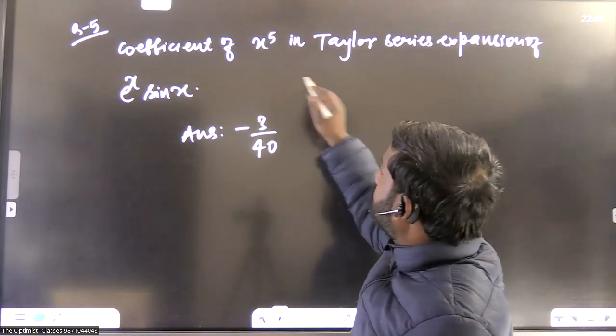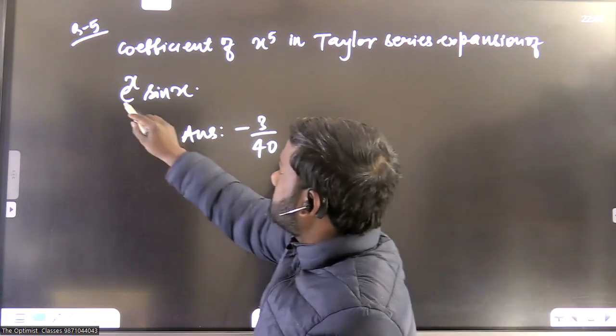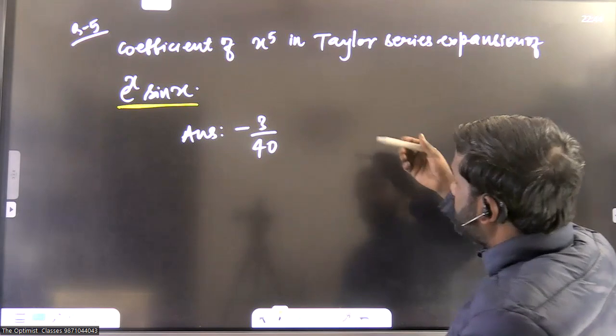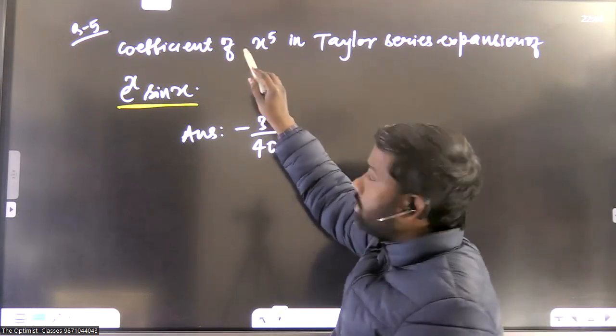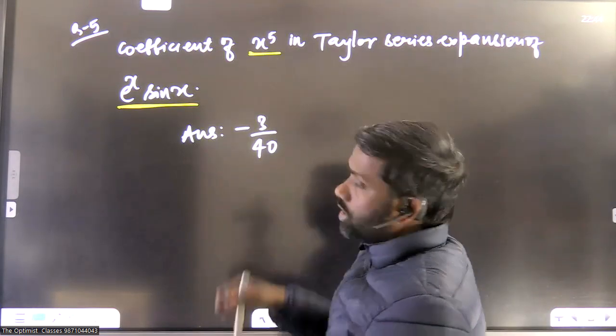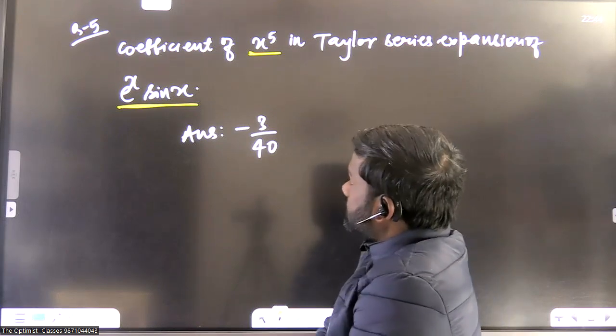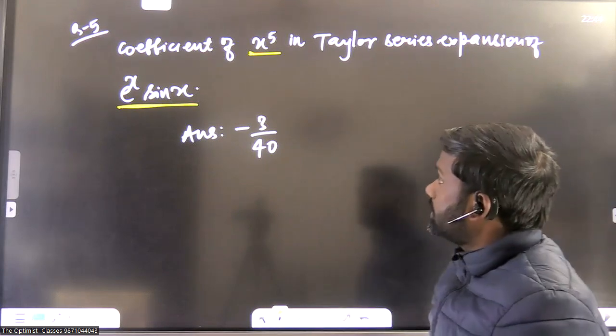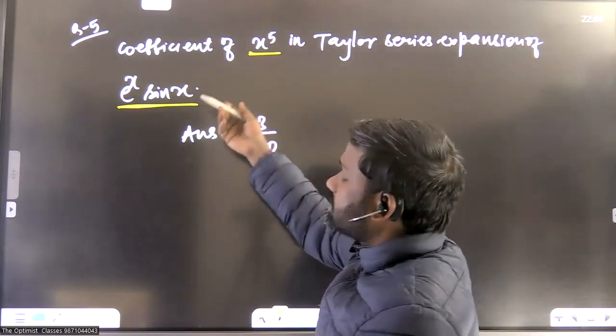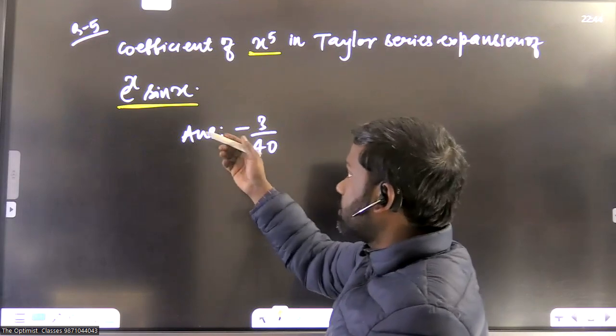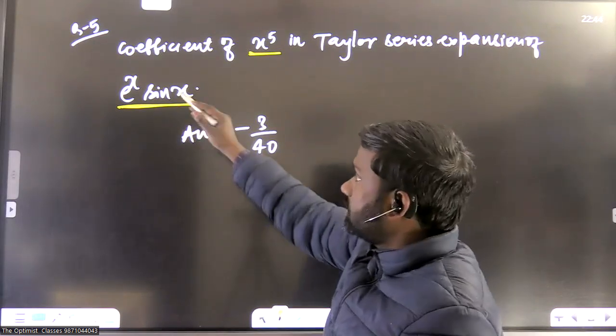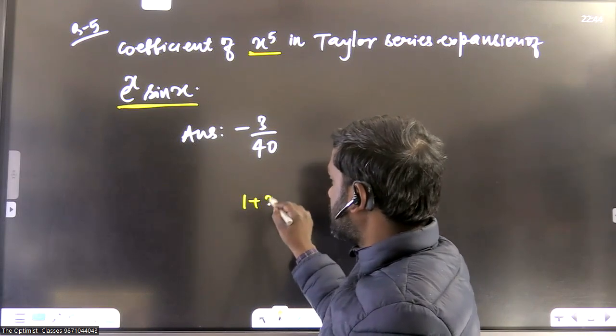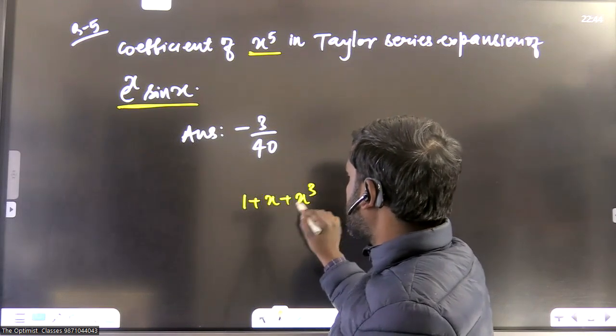Now, this is a question from Taylor series expansion. It says that if we do expansion of this function e to the power x sine x about x equal to 0, obviously, because they are asking to find coefficient of x to the power 5. So if you do expansion about x equal to 0, then what is the coefficient of basically x to the power 5? So this is a very easy question. You can write expansion of exponential.